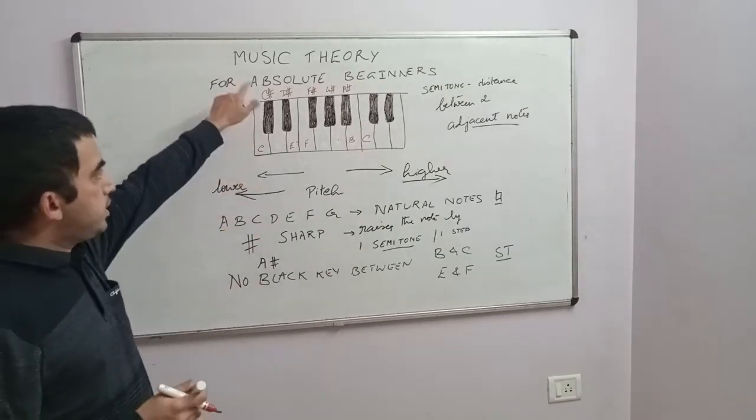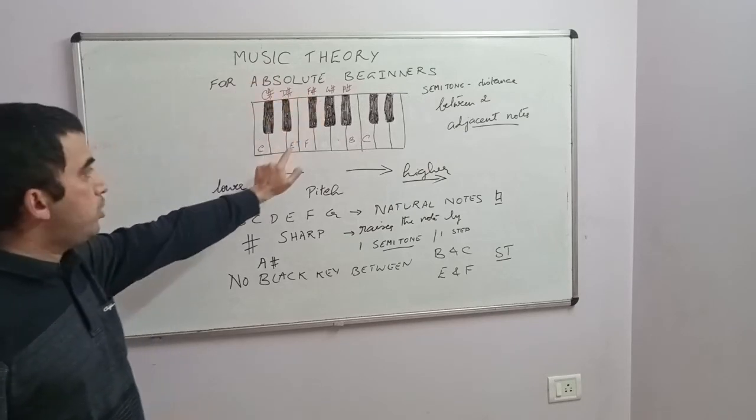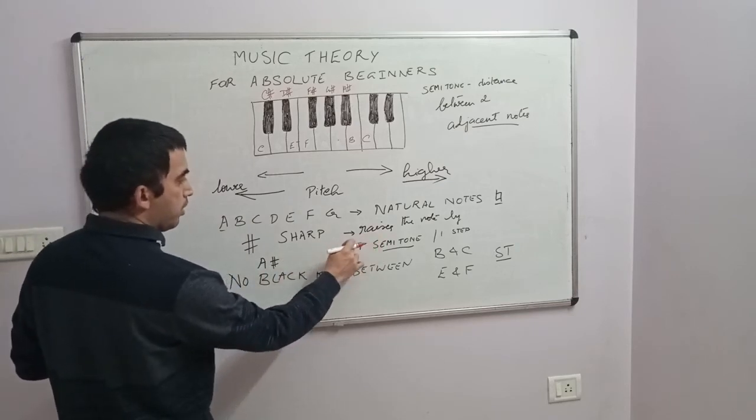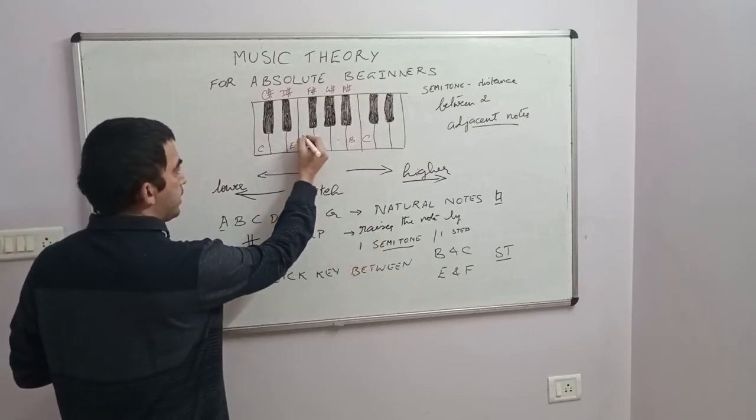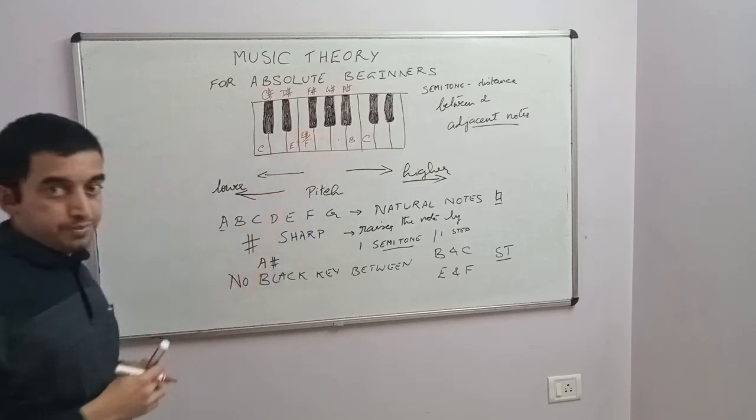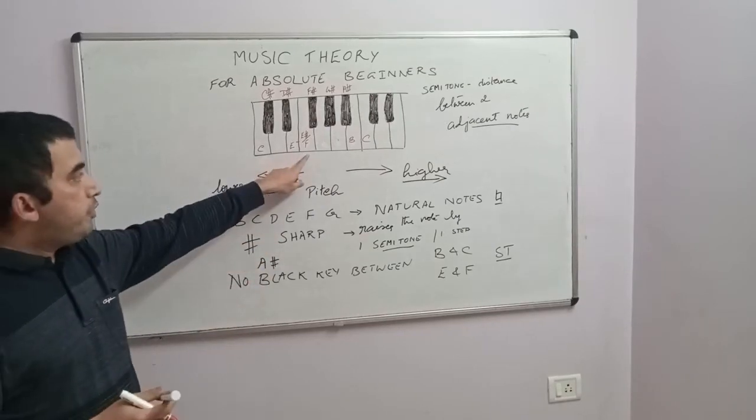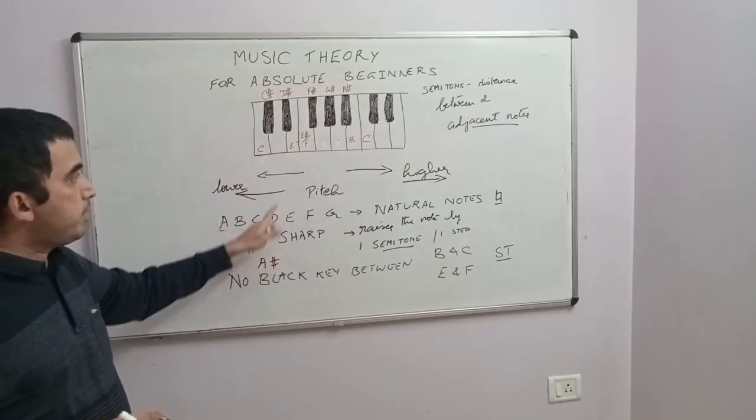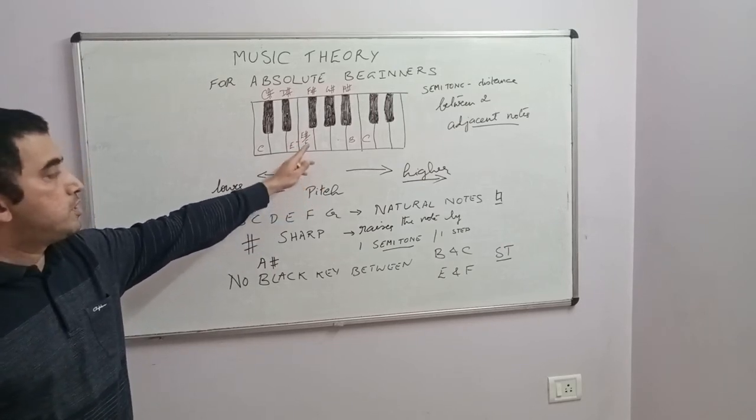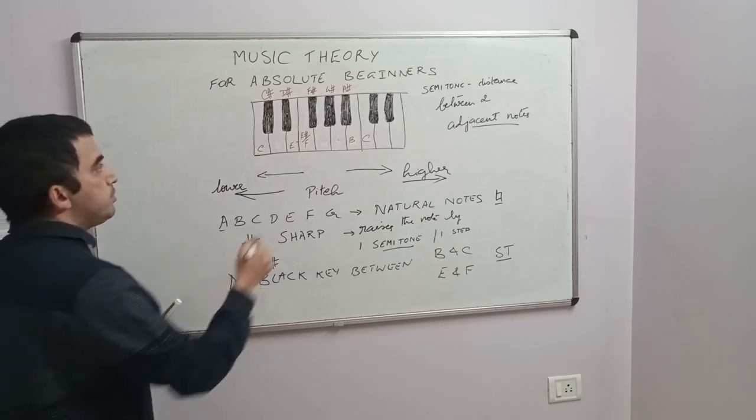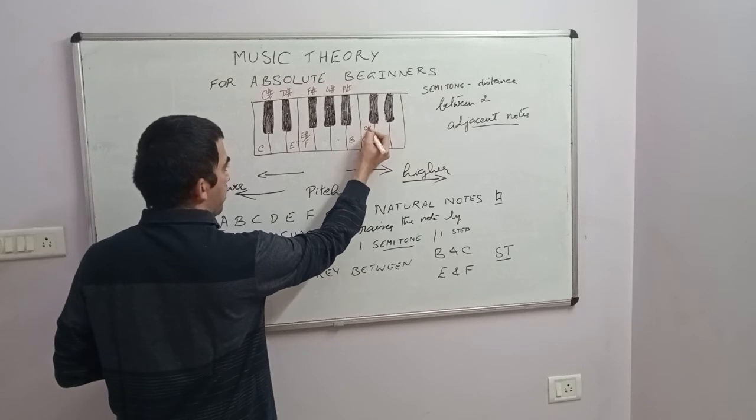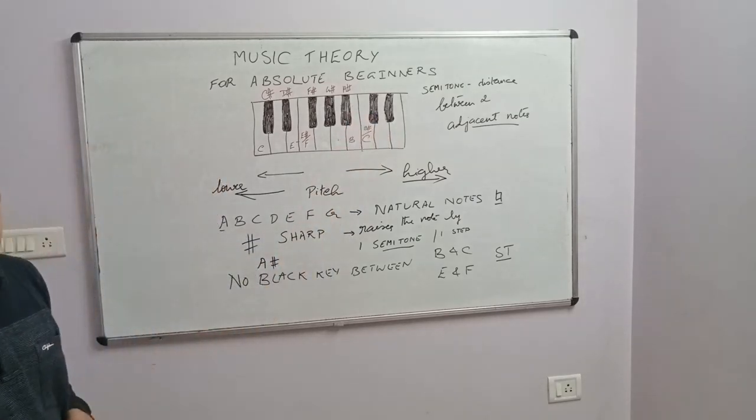The next question will be: what about E sharp and B sharp? By this rule, if you write E sharp, E sharp is nothing but F, because F is the note immediately to the right of E. When you raise E by one semitone, it becomes E sharp, which is nothing but F. Similarly, between B and C, B sharp is the same as C.